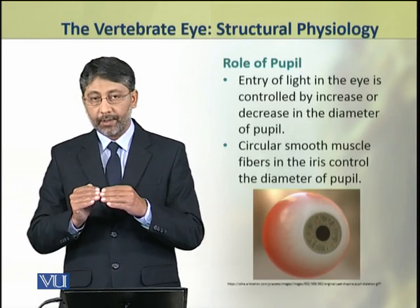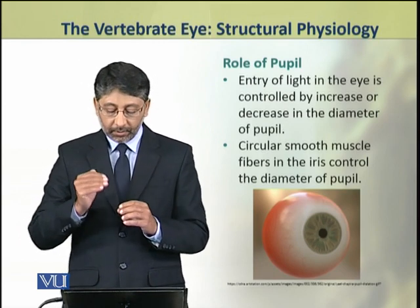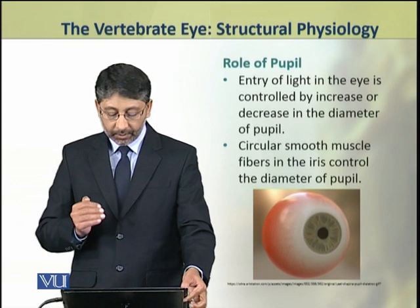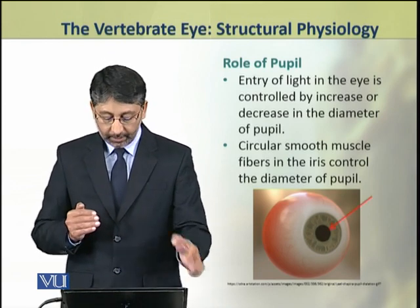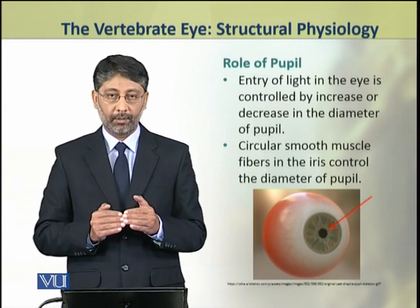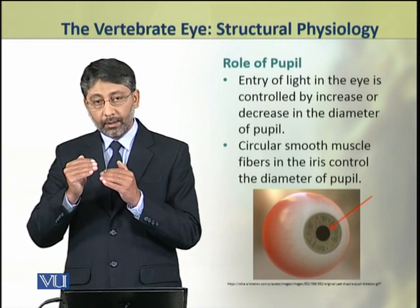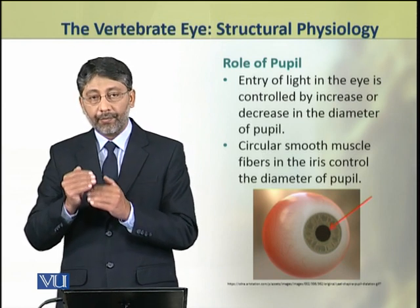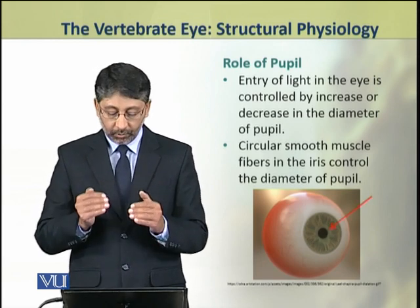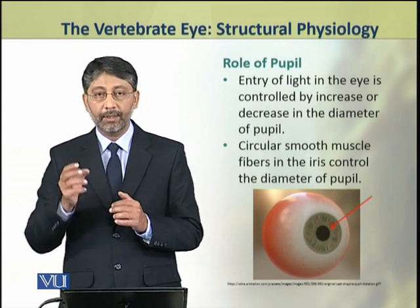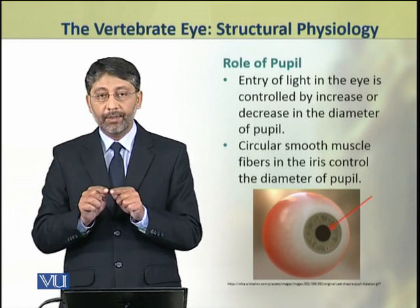Now we shall discuss the role of the pupil. The entry of light into the eye is controlled by an increase or decrease in the diameter of the pupil. This control on the diameter of the pupil is due to the circular smooth muscle fibers in the iris that encircle the pupil.